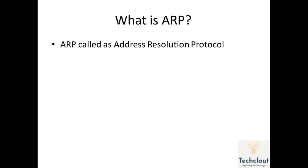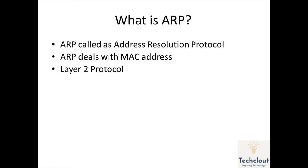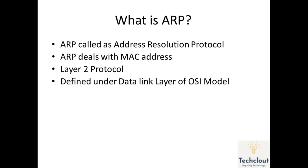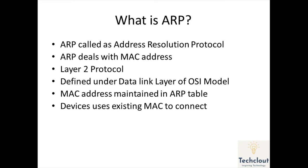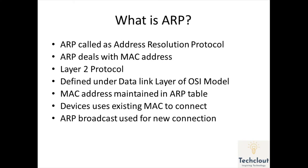ARP stands for Address Resolution Protocol. ARP generally deals with the MAC address and it is a Layer 2 protocol because it is defined under the data link layer of the OSI model. The MAC address is maintained in the ARP table, and devices use the existing MAC address to connect with other devices in the network. ARP also uses broadcast for new connections.